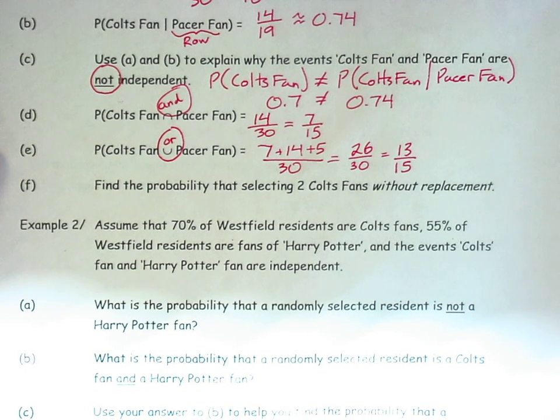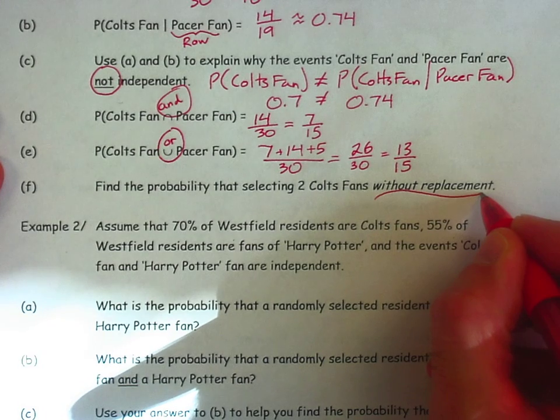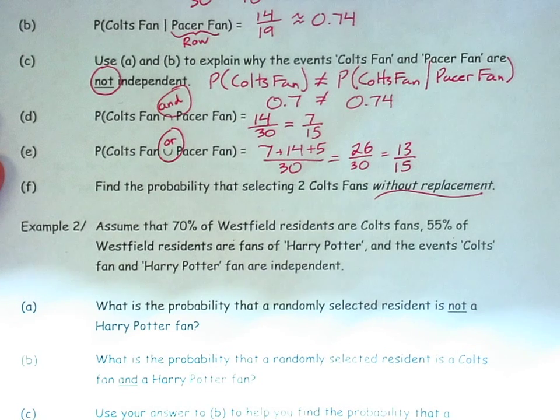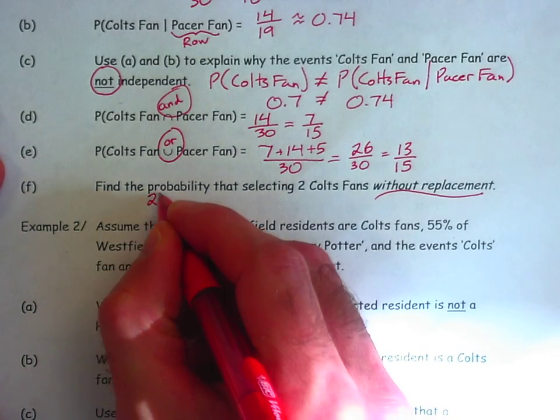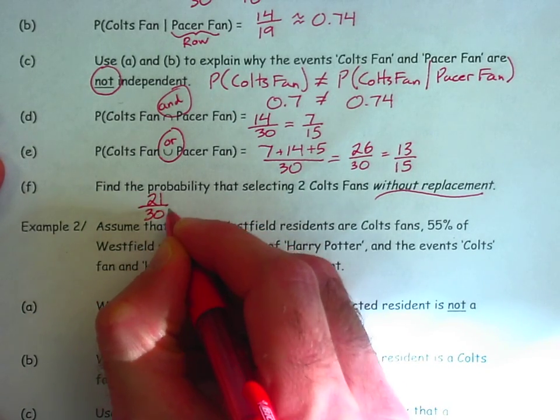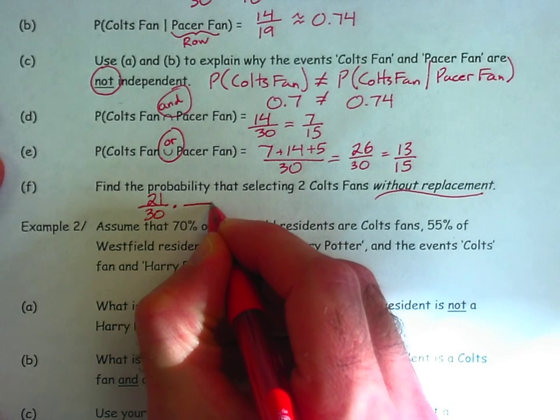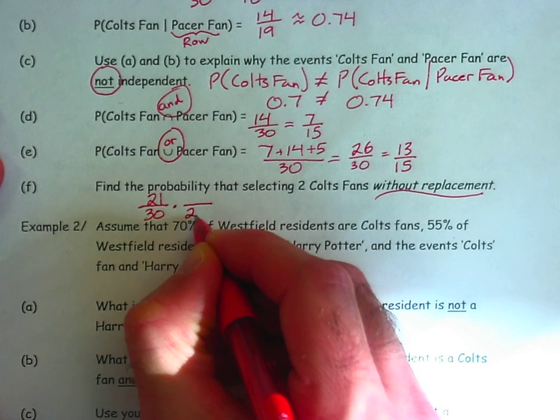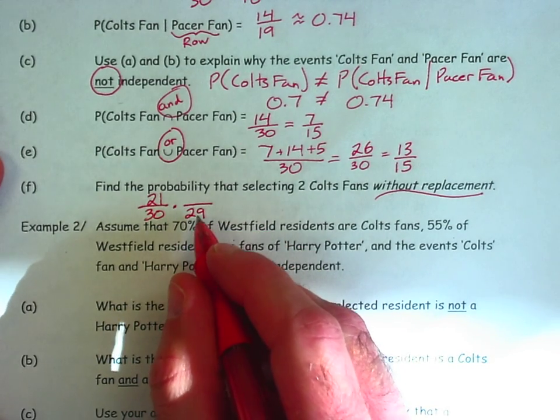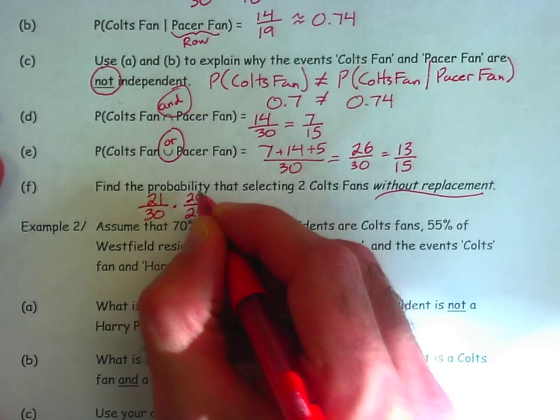Find the probability of selecting two Colts fans without replacement. So all of the other questions involved selecting one individual. Now we're going to select two individuals out of these 30. So let's select the first individual first. There are 21 possible Colts fans that I could have selected out of 30. But understand, if I don't replace that Colts fan, there are now, to find the second Colts fan, only 29 subjects from which I can choose. And only 20 of those subjects are Colts fans.